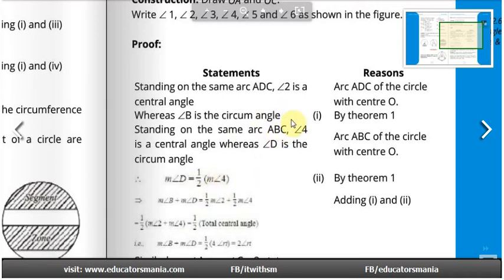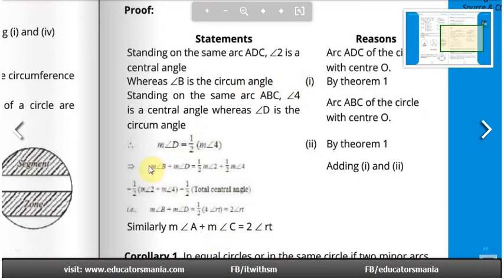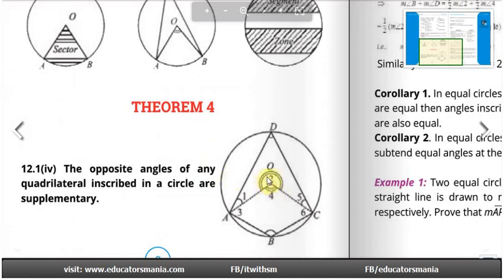Now we add equations 1 and 2. On the left-hand side we have major angle B plus major angle D, and on the right-hand side half of major angle 2 plus half of major angle 4. Taking half as common, from the figure we can see that angles 2 and 4 together form a complete circular rotation, which is 360 degrees, written as 4RT.